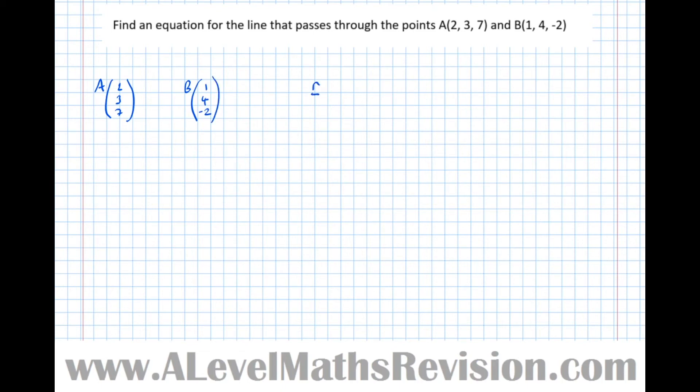So we need two things for this. We need the equation R equals a point P plus a certain number of steps in a given direction. Well, we've got the point P. In fact, we've got a choice of two points. We can use that point there or that point there. So we've got R equals (2,3,7) plus lambda.